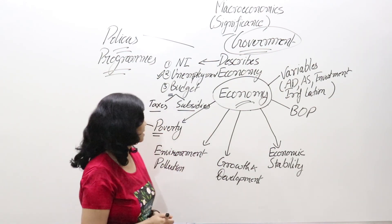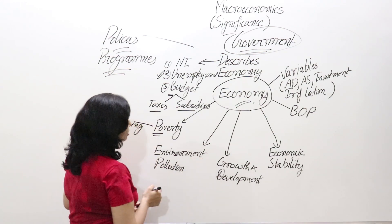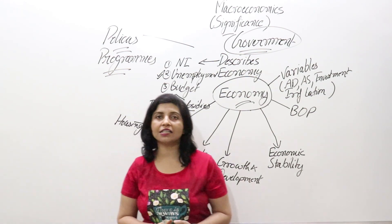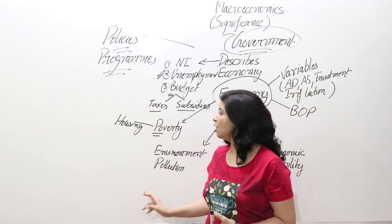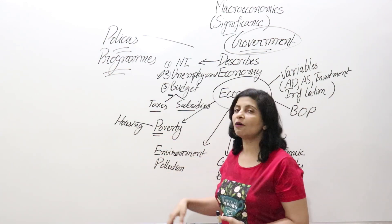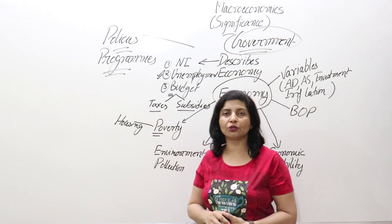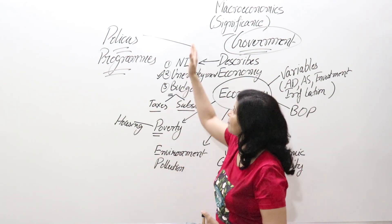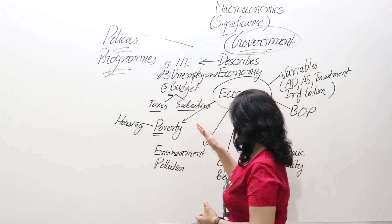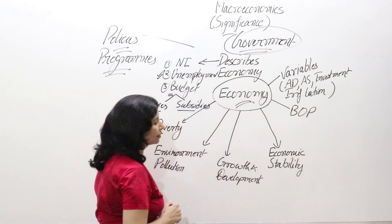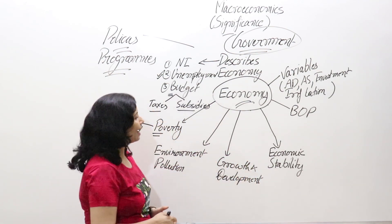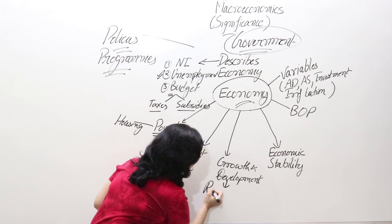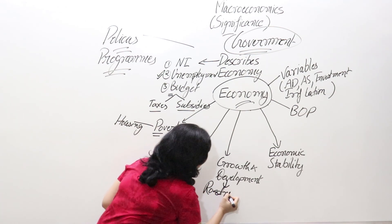Any nation cannot develop if there is high pollution. To correct the problem of pollution and to lower the rate of pollution, the government frames different policies. It also lays down a roadmap for growth and development.